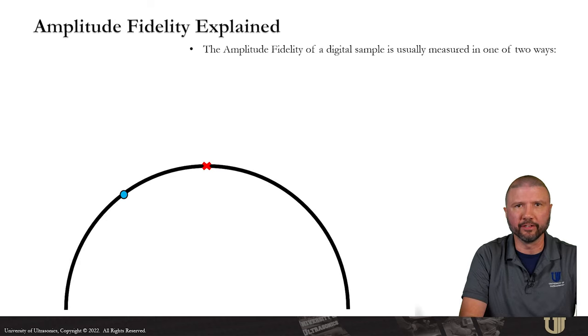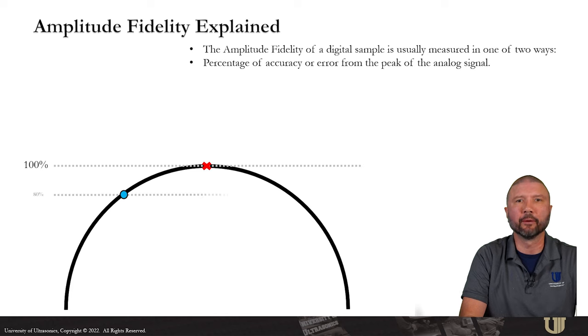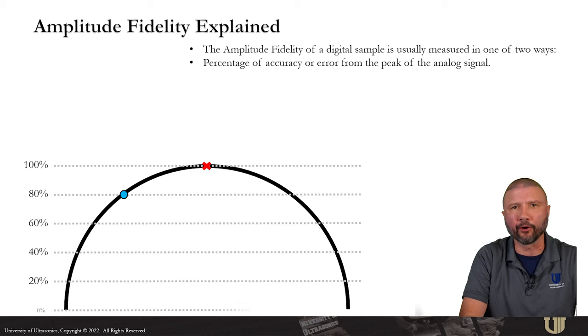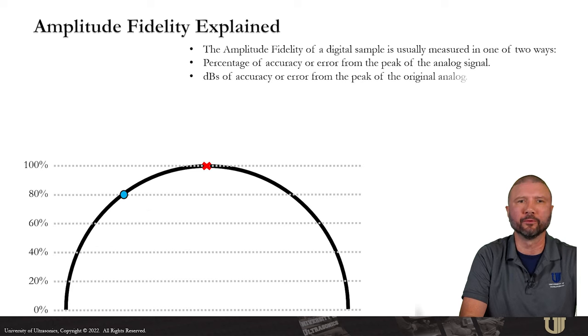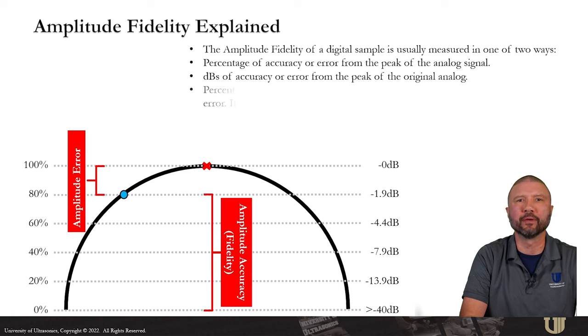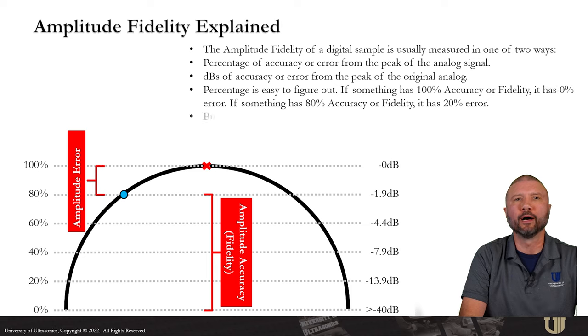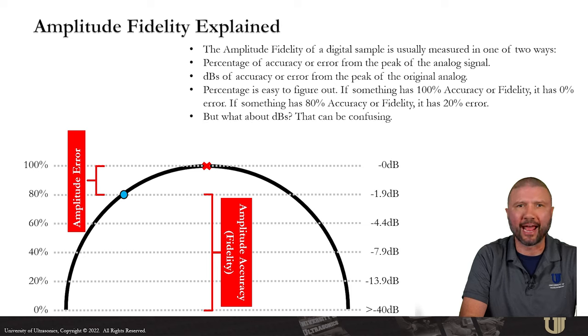The amplitude fidelity of a digital sample is usually measured in one of two ways: percentage of accuracy or error from the peak of the analog signal, or dBs of accuracy or error from the peak of the original analog. A percentage is easy to figure out. If something has 100% accuracy or fidelity, it has 0% error. And if something has say 80% accuracy or fidelity, it's got 20% error.